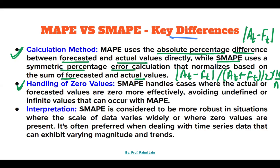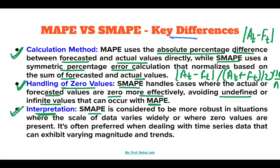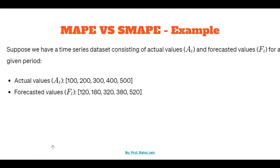Another key difference is in the handling of zero values. SMAPE handles cases where the actual or forecasted values are zero more effectively, avoiding undefined or infinite values that can occur with MAPE. A further key difference is in interpretation: SMAPE is considered more robust in situations where the scale of data varies widely or where zero values are present. It is often preferred when dealing with time series data that can exhibit varying magnitude and trends. We can understand all these differences with the following numerical problem.